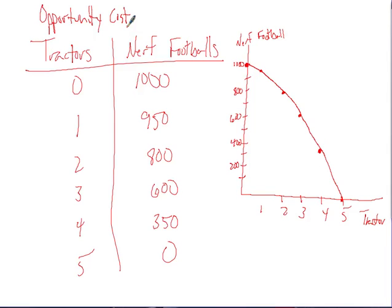Your opportunity cost of coming to school would be the extra sleep or whatever you would find most valuable. This is the example from the last video, just cleaned up a bit. This is the production possibilities frontier, and the curve shows that if we use all our resources to produce Nerf footballs, we can't produce tractors, and if we produce all tractors, we can't produce Nerf footballs. The chart gives us the combination of choices we can produce.